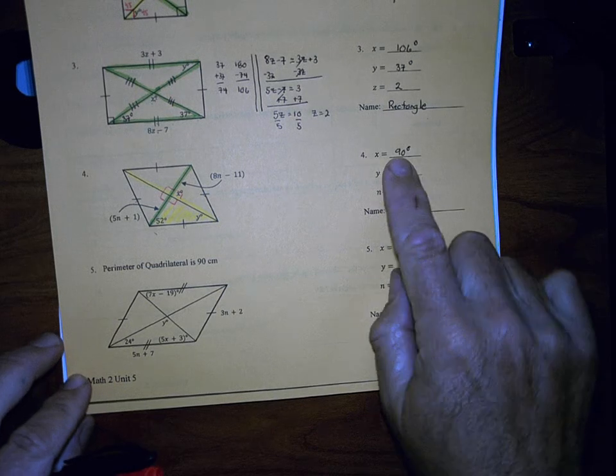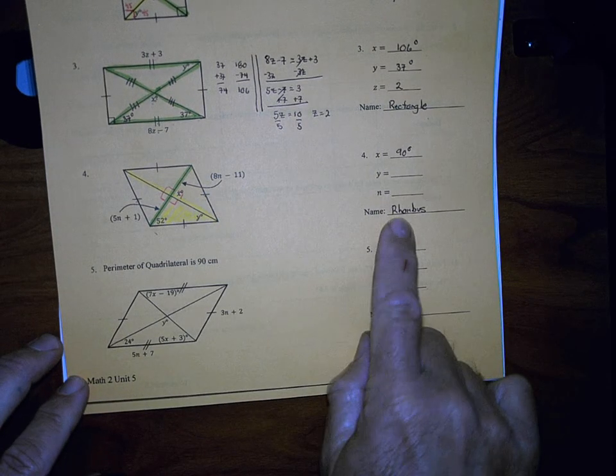All right, we're back. We found X to be 90. We've got a rhombus to review.